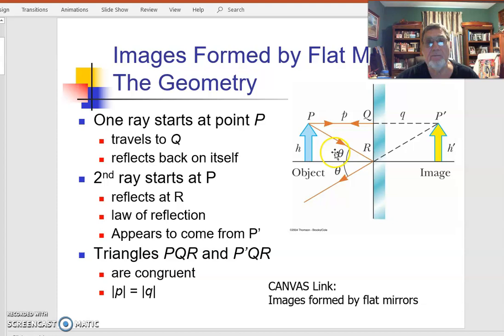Now, you can tell by looking at these triangles, because the reflected angle is equal, that angle equals that one. And that means these two angles are equal. If the height's the same, that means the distance is the same. So for flat mirrors, then we have p equals q, absolute value.